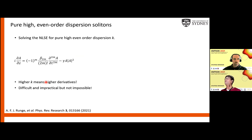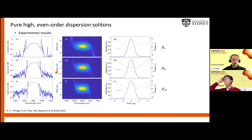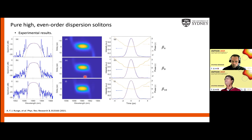One obvious way to generalize is to ask: if fourth-order dispersion works, how about sixth order, eighth order, or tenth order? Because the spectral pulse shaper in our cavity can mimic any kind of dispersion we want. Indeed, we've done that. Looking at the spectrum, time trace, and spectrogram, you see the spectra become more and more flattened as you go to higher order. Although these are sextic, octic, and decic solitons, they more or less look the same.